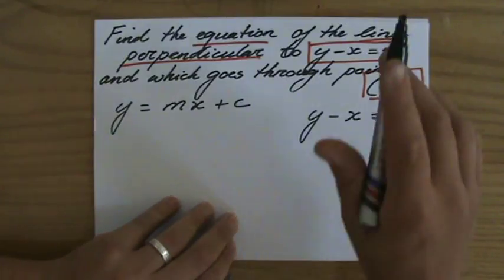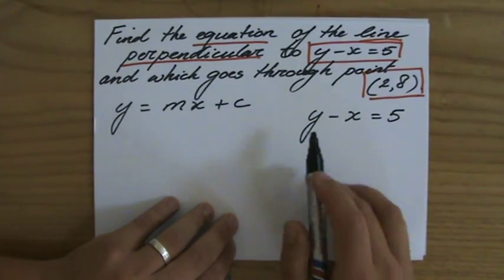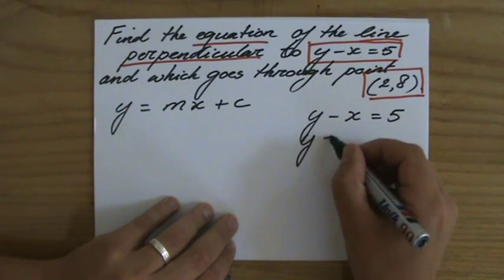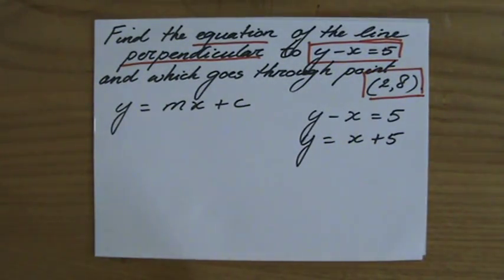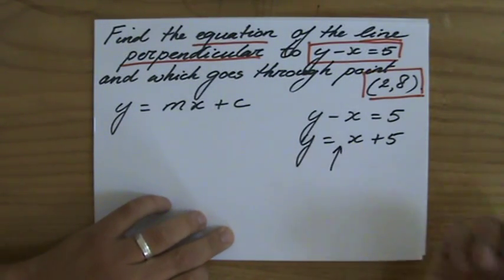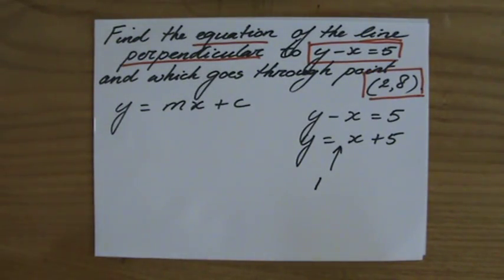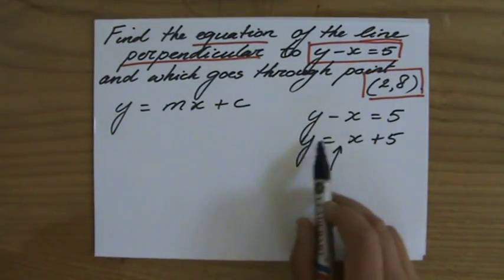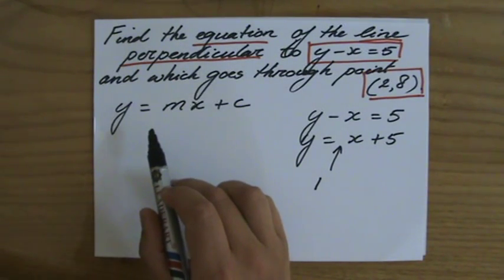y minus x equals 5, so this line is to be perpendicular to that line. Now what is the gradient of this line? I can't see that yet because it's not written in gradient intercept form, so I rearrange it: y equals x plus 5. So what is the gradient of this line? That is the coefficient of x which is 1. Okay, so the gradient of this line is 1 and the gradient of the line I'm looking for is the negative reciprocal of 1.